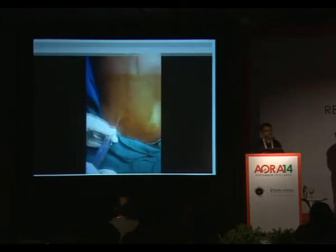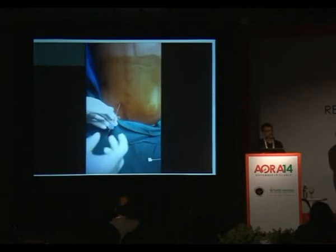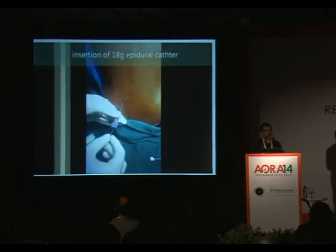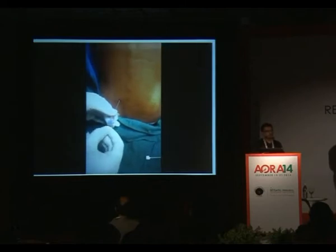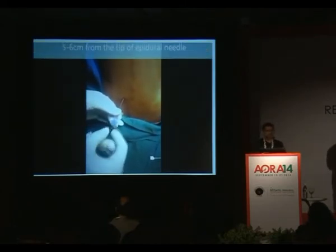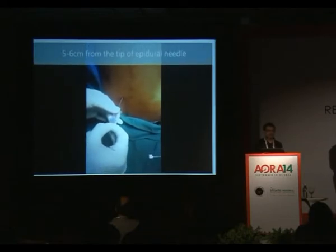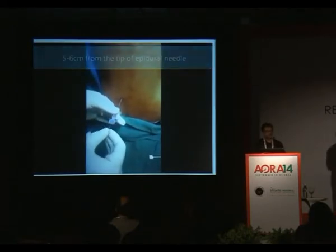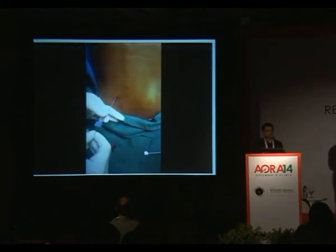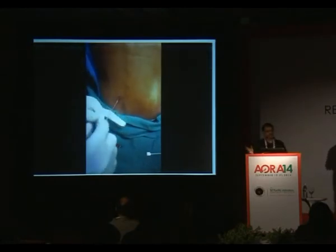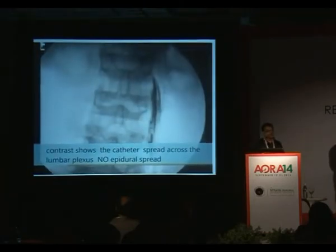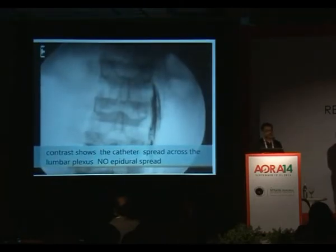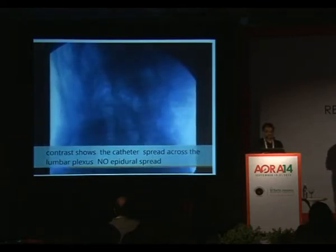At that point, inject around 10 mL of 0.5% bupivacaine, then thread in your catheter, and inject another 10 to 12 mL of 0.5% bupivacaine. To confirm the catheter is really in the psoas compartment and blocking the lumbar plexus, I usually do a contrast study because I'm always in the orthopedic theater. A small amount of contrast and imaging will identify that you are exactly in the lumbar plexus. You can also add a sacral plexus block.